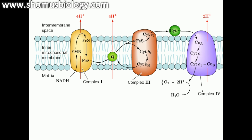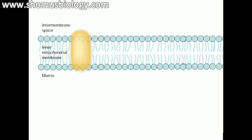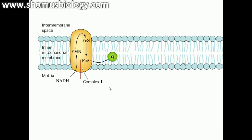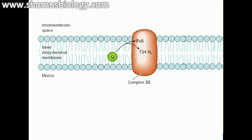Complex 1 transports electrons from NADH to coenzyme Q. It contains more than 40 protein subunits, a bound flavin mononucleotide (FMN) site, and numerous iron-sulfur centers. It translocates four protons into the intermembrane space per NADH oxidized.